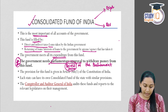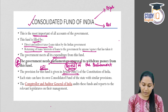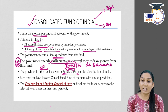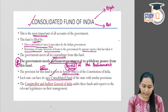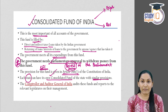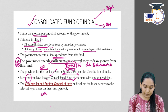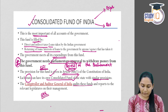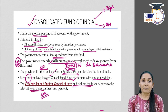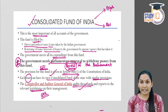The provision for the Consolidated Fund of India is given in Article 266-1 of the Constitution. Each state can also have its own Consolidated Fund with similar provisions. The CAG — the Comptroller and Auditor General of India — audits these funds and reports to the relevant legislatures on their management, covering both the central and state consolidated funds.